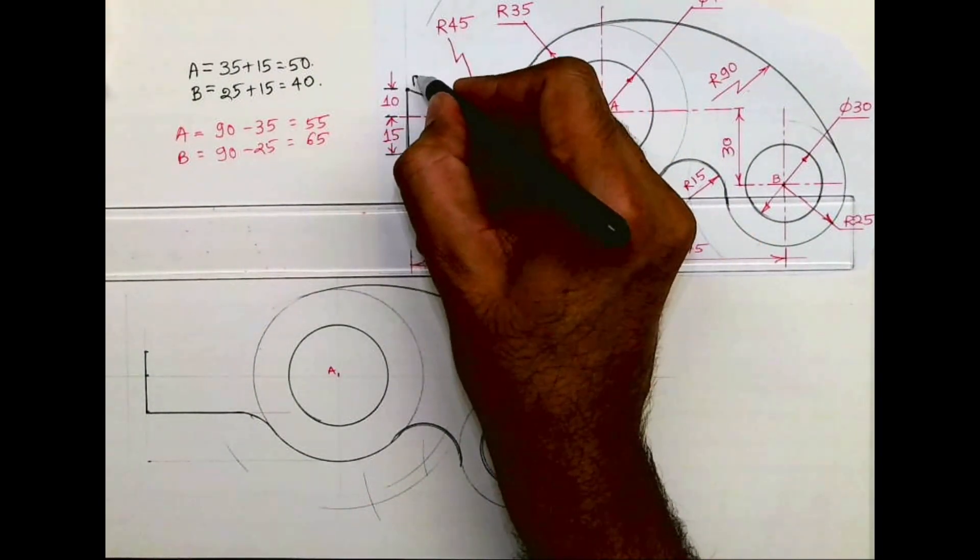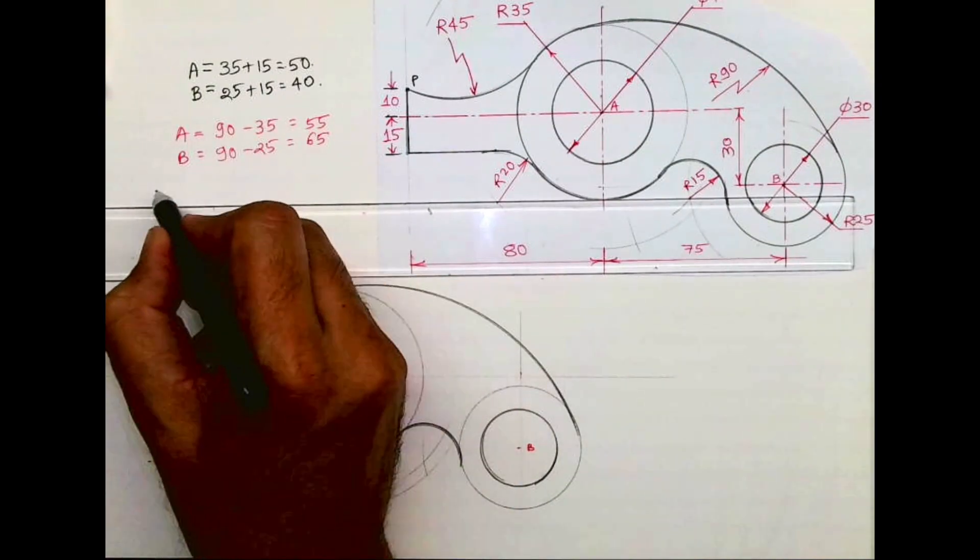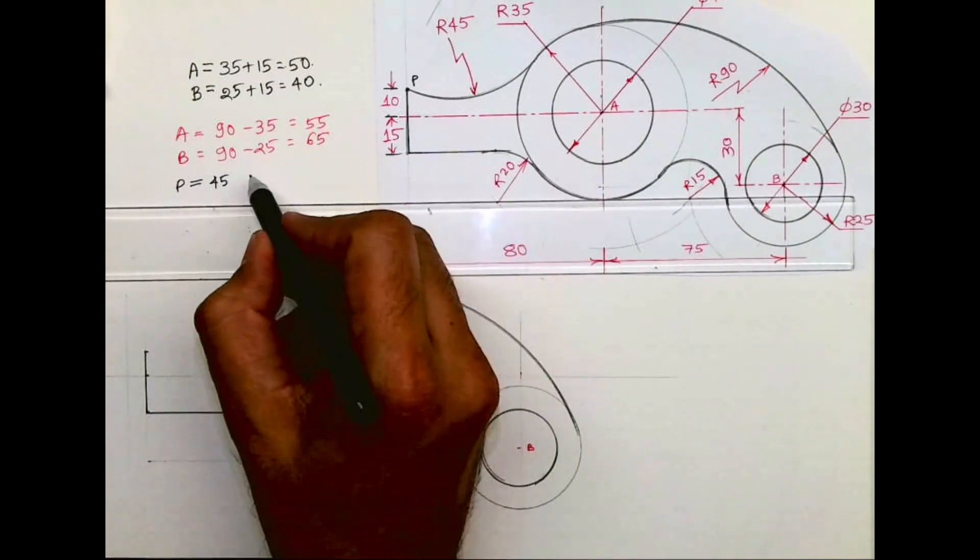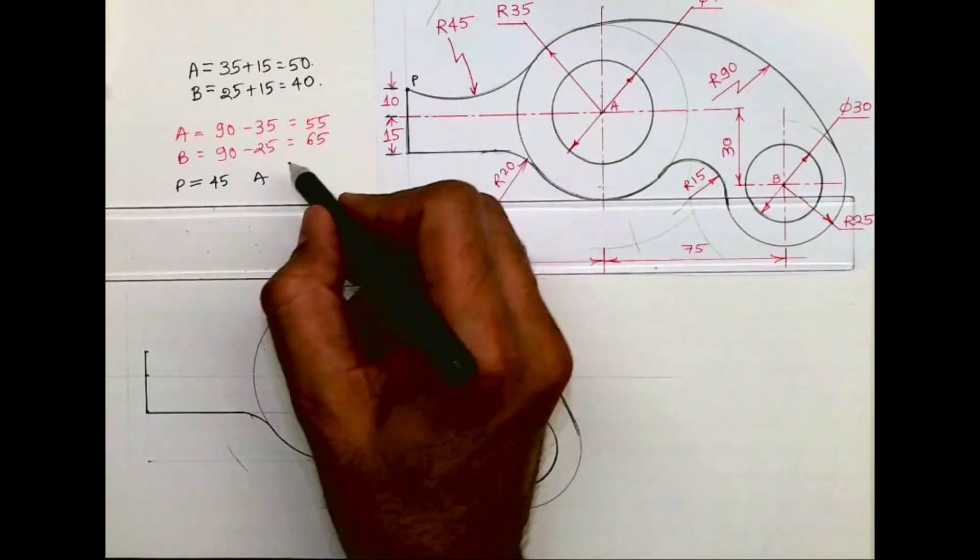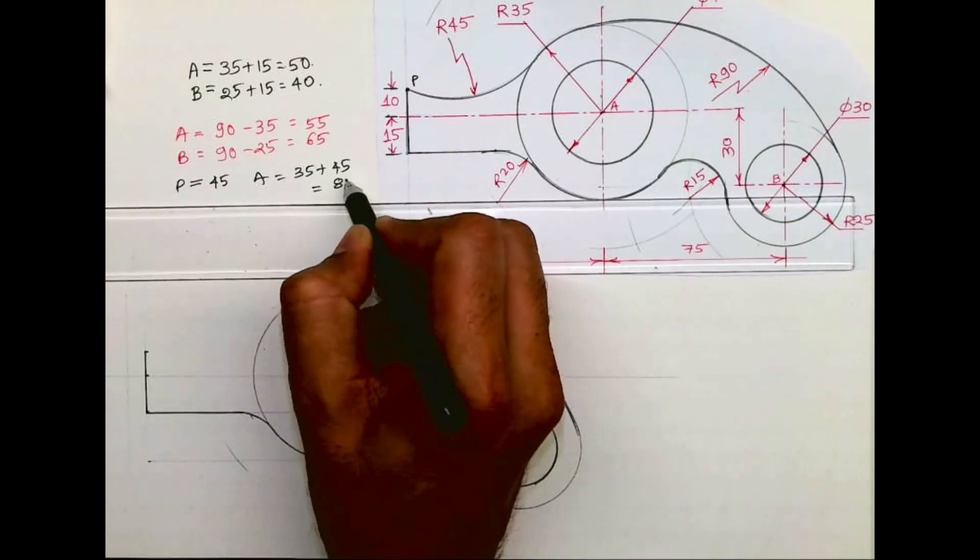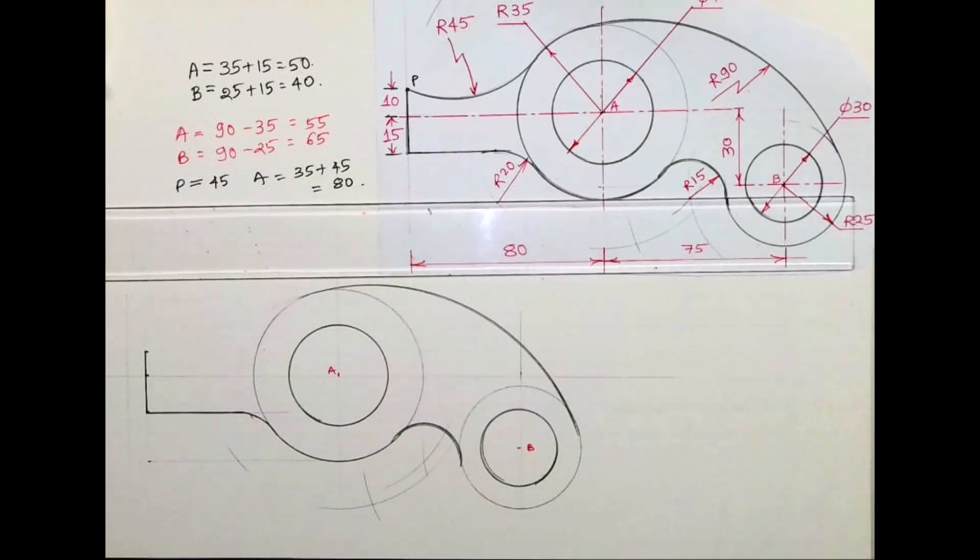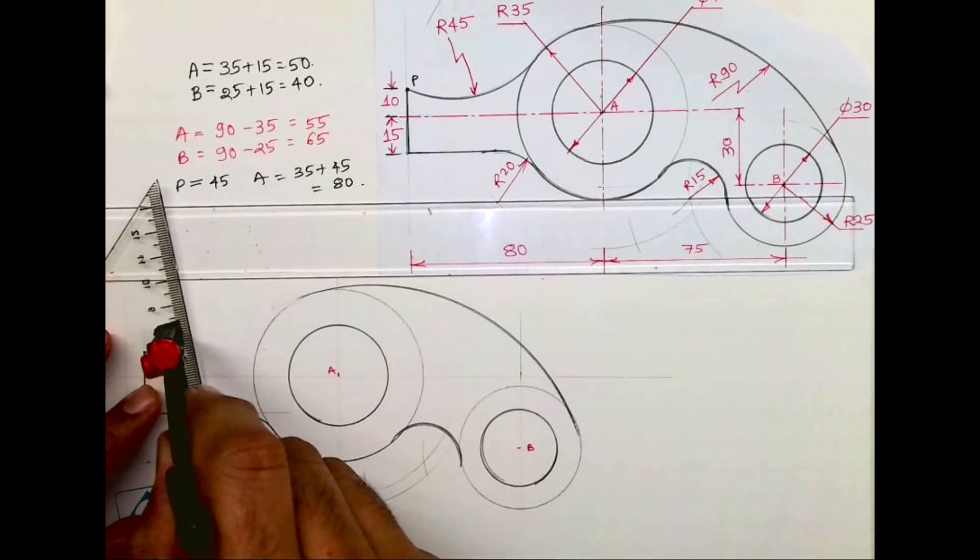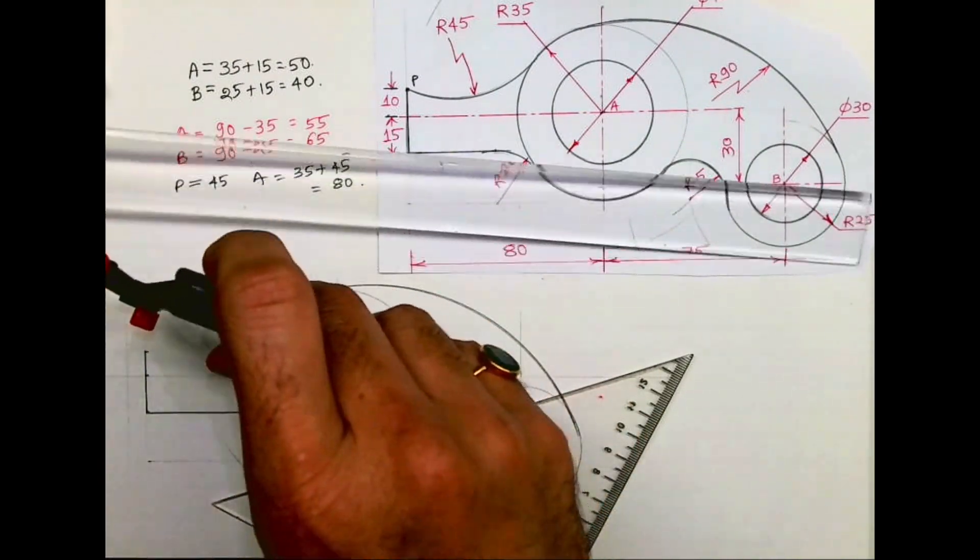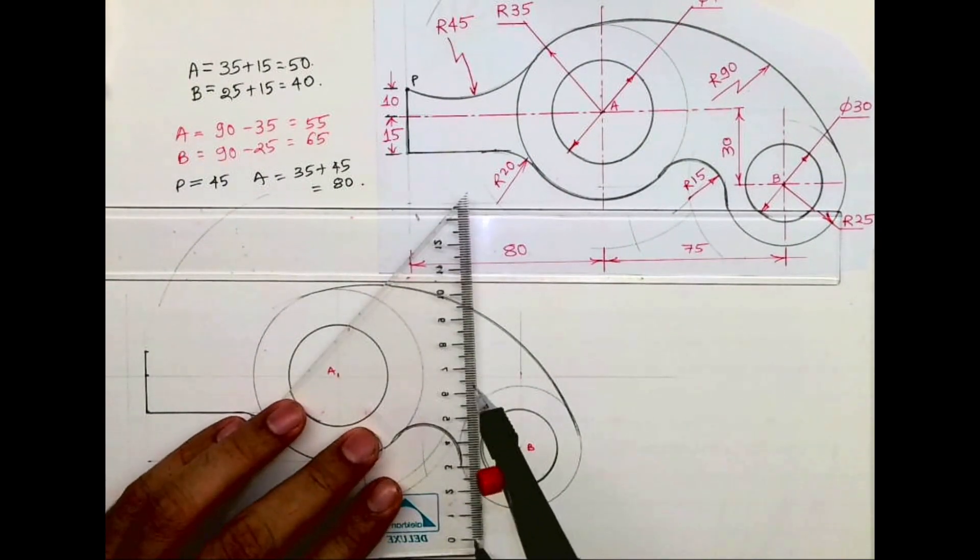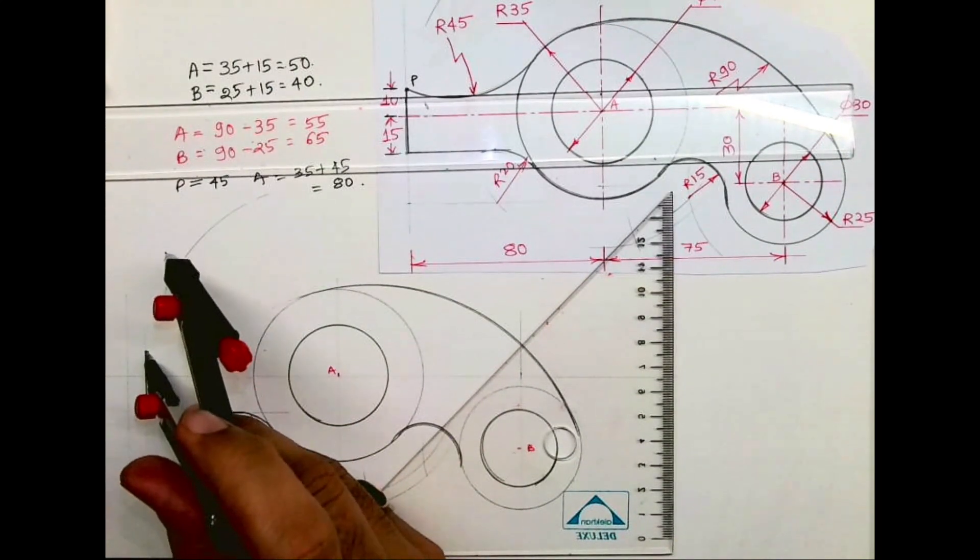Now from this point, let's say this is point P. We need to draw radius 45. From point P you cut 45, and from point A you cut 35 plus 45, which is 80. Again it's an external arc.